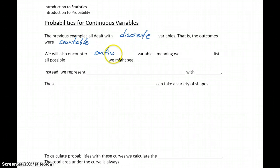We'll also encounter continuous variables, meaning we can't list all the possible outcomes. So this gets into things like if we're taking measurements. Something could be three inches long or four inches long, or it could be somewhere in between. It could be three and a half inches.